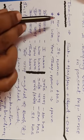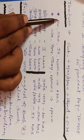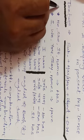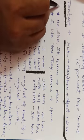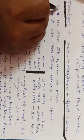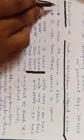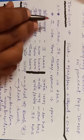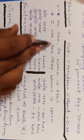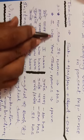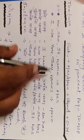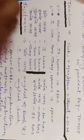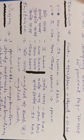Now let's look at one instance — an example. Mere paas English ki book hai — I have an English book. Mere paas do English ki books hain — I have two English books. Mere paas kai English ki books hain — I have many English books. Isi tarike se: hamare paas English ki book hai — we have an English book. Tumhare paas English ki book hai — you have an English book. Unke paas ek English ki book hai — they have an English book.